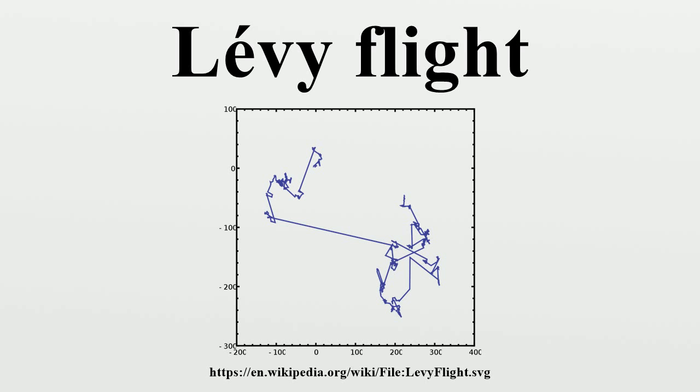A Lévy flight is a random walk in which the steps are defined in terms of the step lengths, which have a certain probability distribution, with the directions of the steps being isotropic and random. The particular case for which Mandelbrot used the term Lévy flight is defined by the survivor function of the distribution of step sizes.